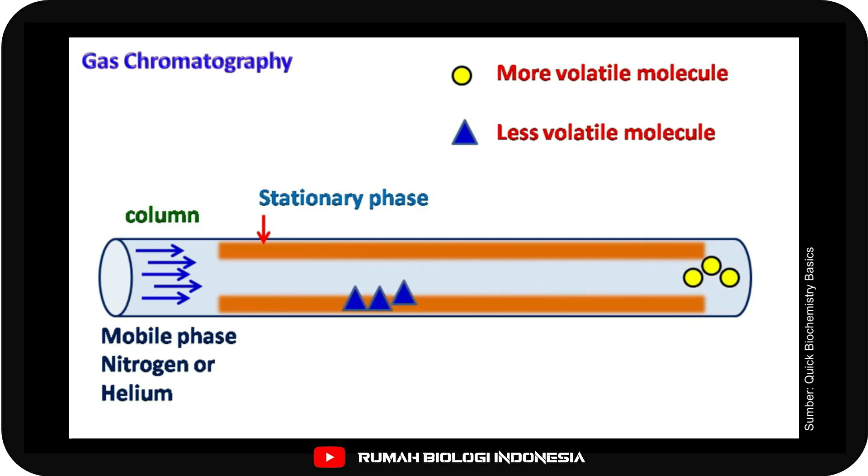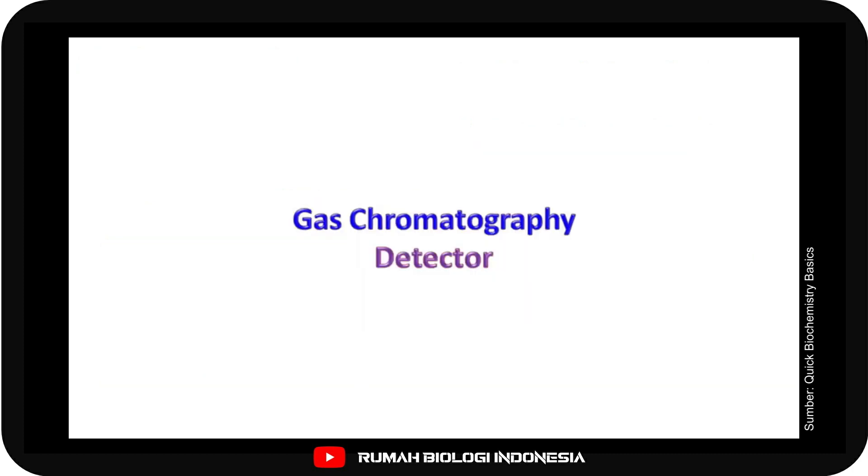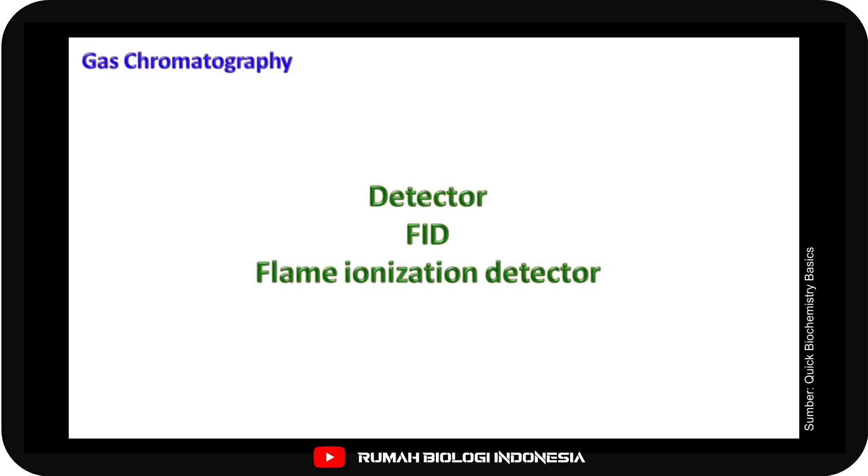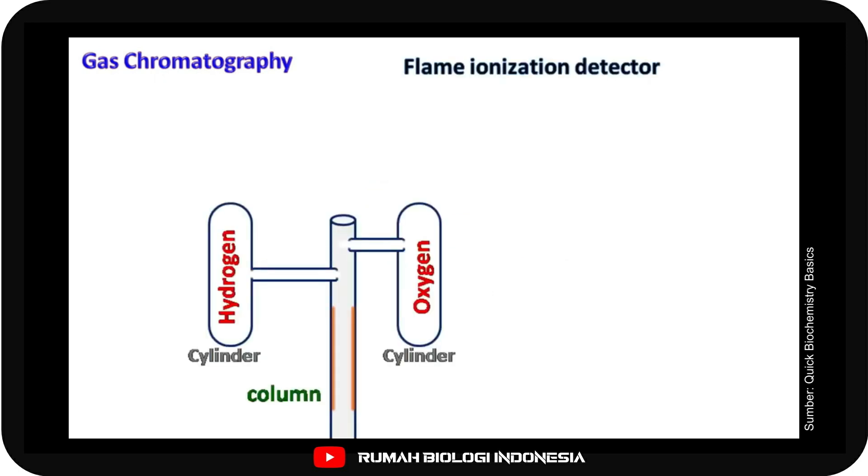Once the separation is completed, the detection is done with the detector attached at the end of the column. One of the most common detectors used with gas chromatography is flame ionization detector or FID.